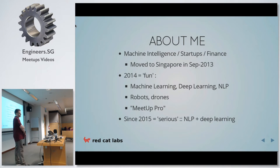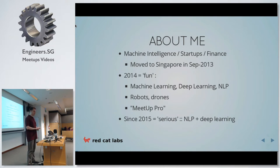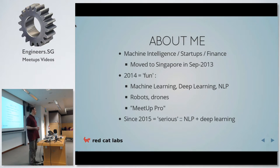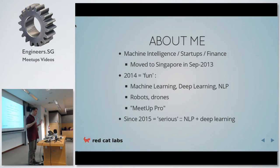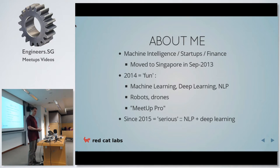Just a quick bit about me. I moved to Singapore in September 2013. 2014 was basically just me having fun — I had zero clients, a home office, and I just did machine learning the whole time. Back in the early 90s I did a PhD in the UK in machine learning, but after that I went into quant finance, moved to New York, and lived there for a long time. Now I've decided I should do what I actually want to do, which is machine learning. 2015 has turned into serious mode — I have a proper client, a local Singaporean company, doing natural language processing involving some deep learning.